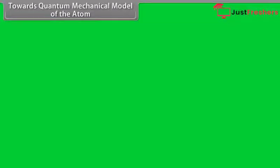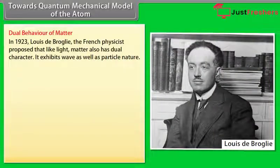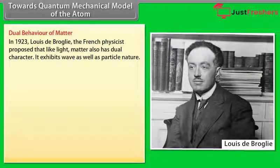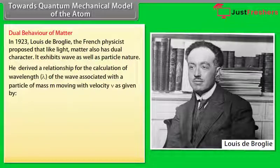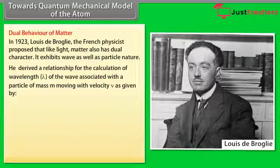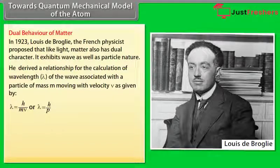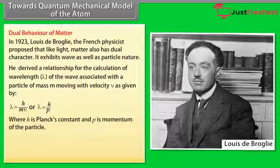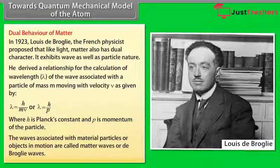Towards the quantum mechanical model of the atom: Dual behavior of matter. In 1923, Louis de Broglie, the French physicist, proposed that like light, matter also has dual character — it exhibits wave as well as particle nature. He derived a relationship for the calculation of wavelength lambda of the wave associated with a particle of mass m moving with velocity v, given by lambda equals h divided by mv, or lambda equals h divided by p, where h is Planck's constant and p is momentum of the particle. The waves associated with material particles or objects in motion are called matter waves or de Broglie waves.